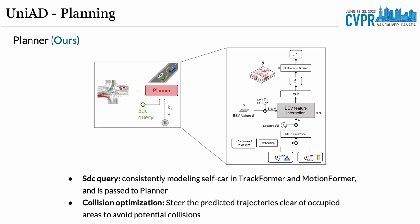At the end of the pipeline, the planner attends to self-driving car queries over all bird's-eye view features to predict future waypoints. The predicted trajectories are then cleared of occupied regions by a post-processing step to further avoid collision.